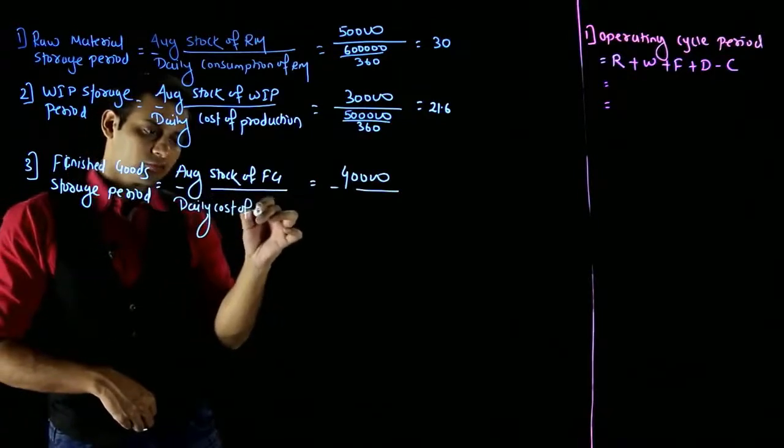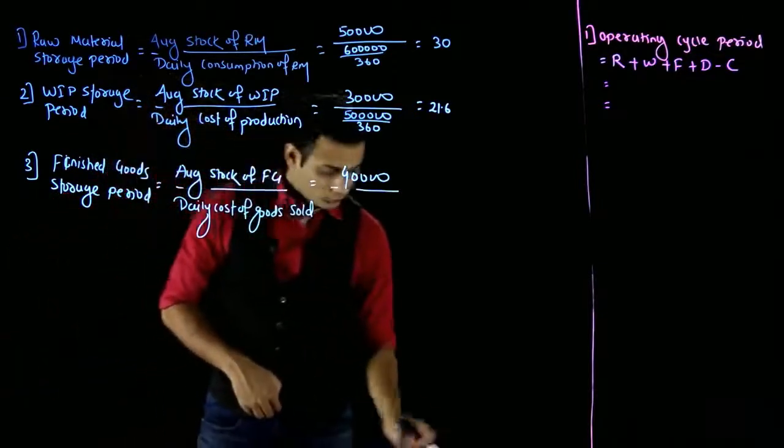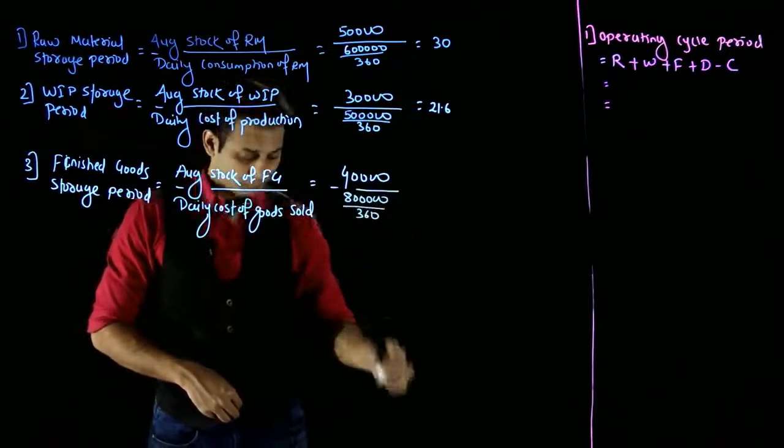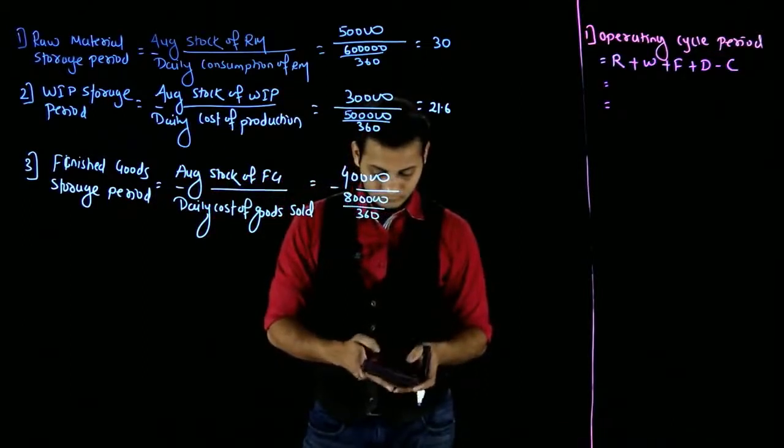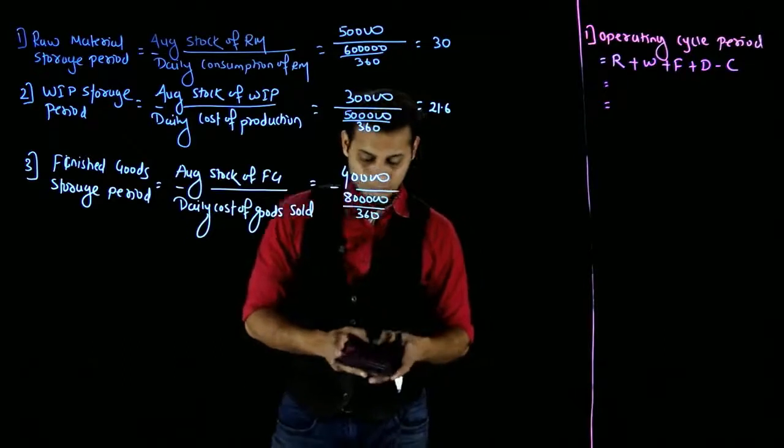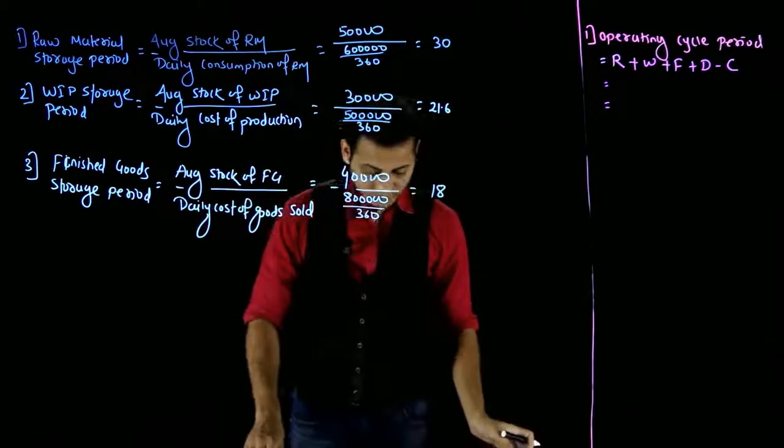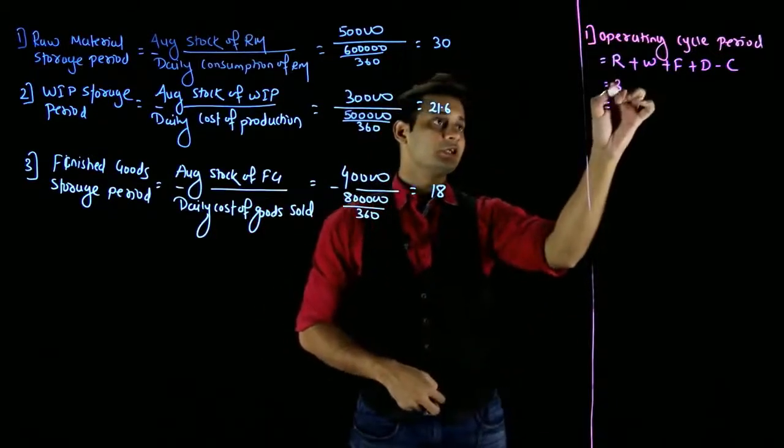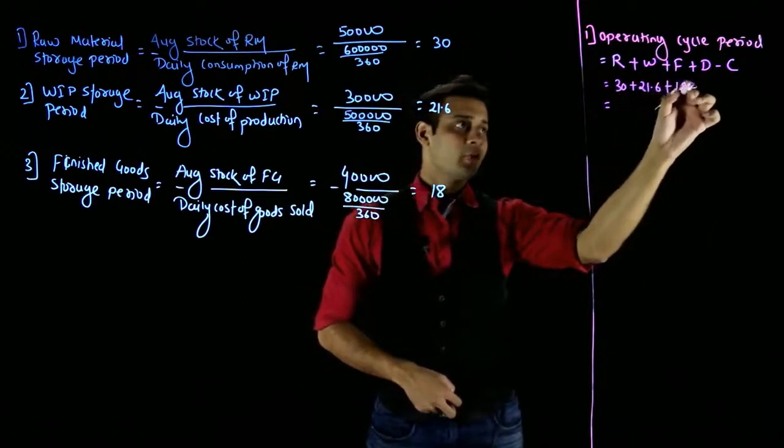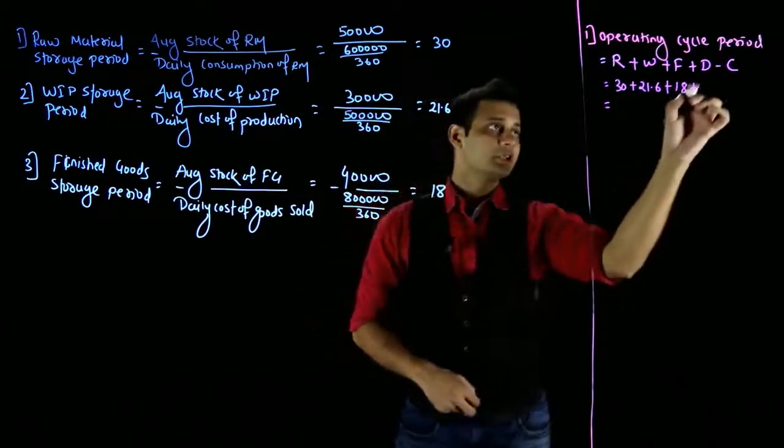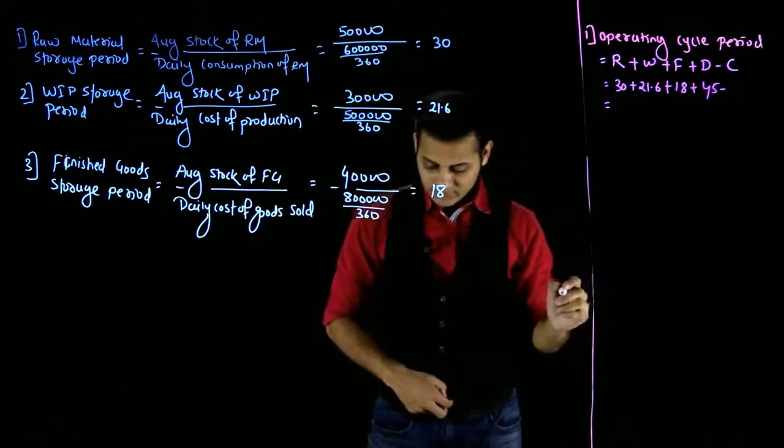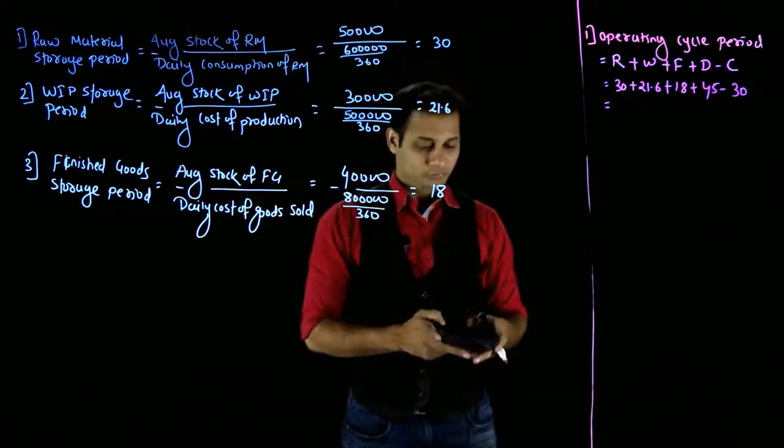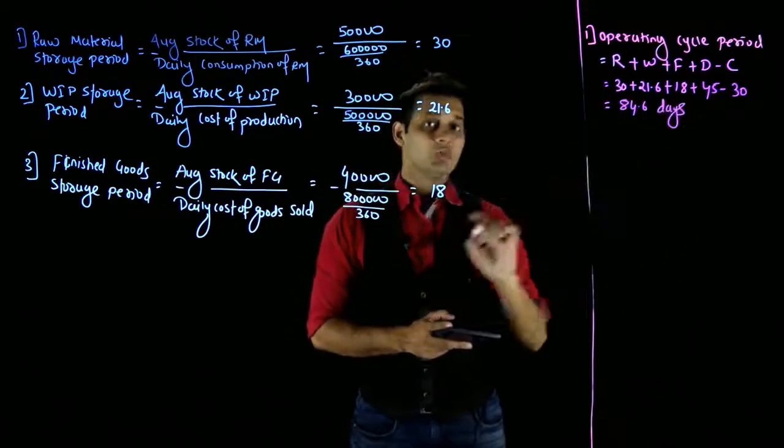This is called daily cost of goods sold. That is not directly given, the other figure is 8,000 divided by 360. So this is 30,000. Plus 21,600 plus finished goods 18,000. Plus debtors 45,000, credit period 30 days creditors. So it comes to 84,600 operating cycle.